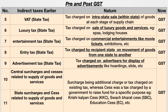The last two points are central surcharges and cess related to supply of goods and services, and state surcharges and cess related to supply of goods and services. A surcharge is an additional charge or tax on an existing tax, whereas a cess is a tax charged by the government to raise funds for a specific purpose — examples include Krishi Kalyan Cess, Swachh Bharat Cess, and Education Cess. Krishi Kalyan Cess and Swachh Bharat Cess were paid by a person in addition to service tax. Now all surcharges and cesses related to supply of goods and services, both central and state, have got replaced with GST.